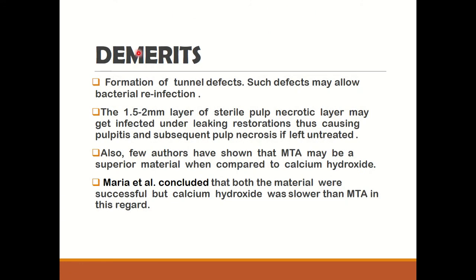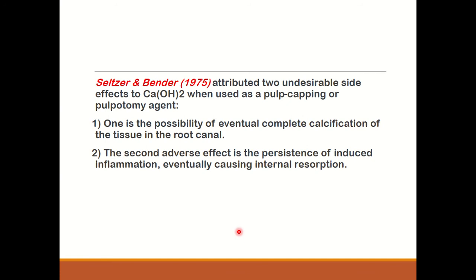However, there are certain disadvantages: there is formation of tunnel defects, and such defects may allow bacterial reinfection. A 1.5 to 2 mm layer of sterile pulp necrotic layer may get infected under a leaking restoration, causing pulpitis and subsequent pulp necrosis if left untreated. Also, some authors have shown that MTA may be a superior material compared to calcium hydroxide. According to a study by Maria et al., both materials were successful but calcium hydroxide was slower than MTA. Seltzer and Bender in 1975 attributed two undesirable side effects: eventual complete calcification of root canal tissue, and persistence of induced inflammation which may eventually cause internal resorption.